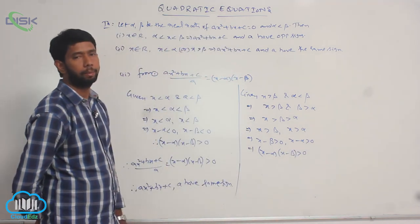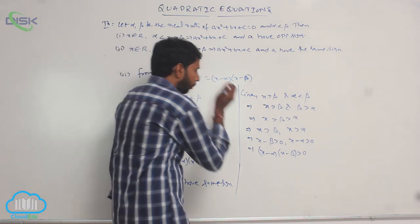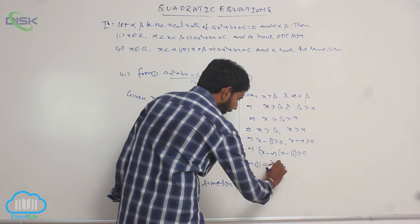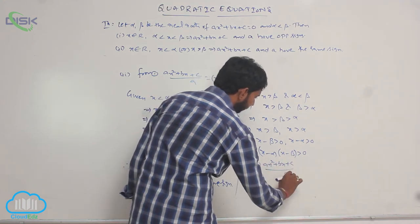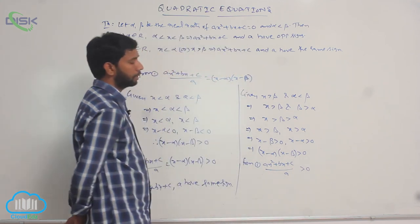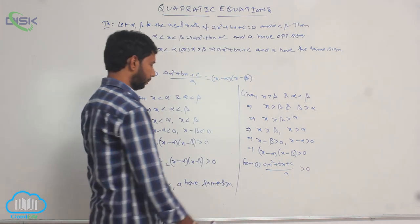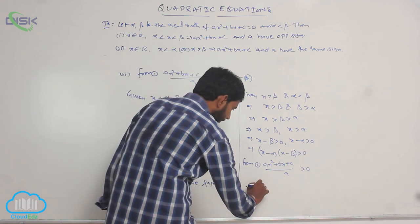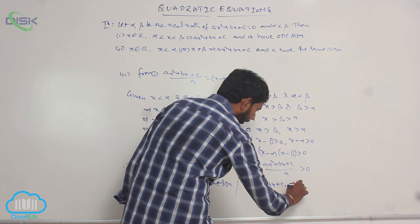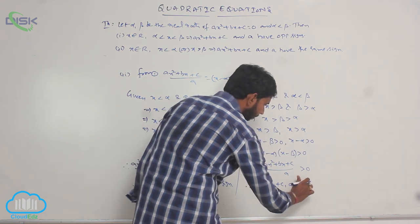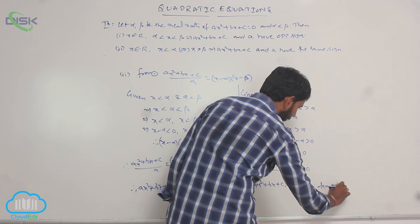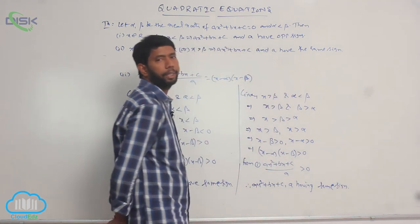Then (x - α)(x - β) is greater than 0. From 1, Ax² + Bx + C divided by A is greater than 0. Therefore, Ax² + Bx + C and A have the same sign — both are positive or both are negative.